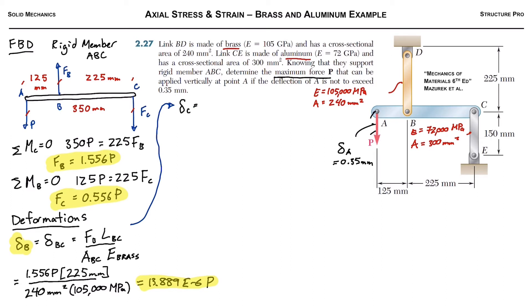So next, we'll do the same thing for point C. The deformation at point C is equal to the elongation of the aluminum link CE. So we'll use all the aluminum properties. I won't rewrite the FL over AE, but I'll just start plugging things in here. So I've got the 0.556P. Then we got the length, which is 150 millimeters, all divided by the area, 300 millimeters squared. And then this time, it's the modulus of elasticity of the aluminum, which is 72,000 megapascals.